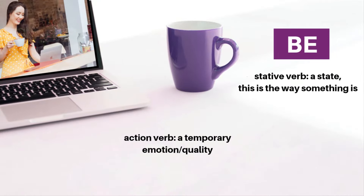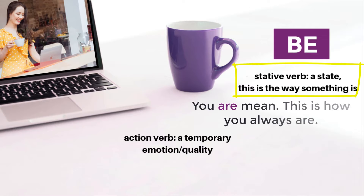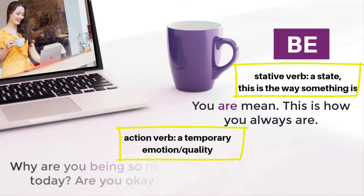'Be' — stative: a state, the way something is. 'You are mean' — this is how you always are. Action: a temporary emotion or quality. 'Why are you being so mean today? Are you okay?'